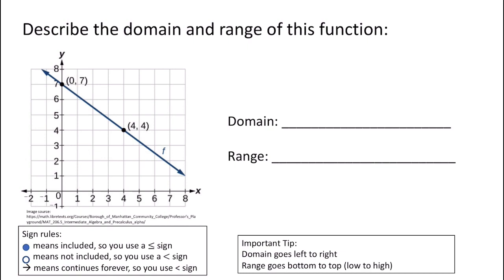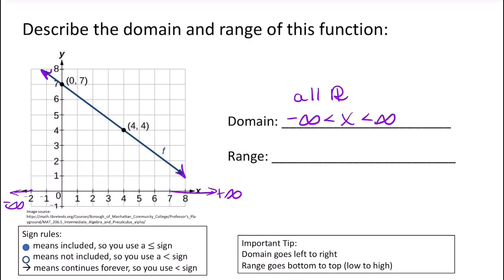Now let's describe the domain and range of this line with arrows at both endpoints. For the x values, it goes on forever to the right — positive infinity — and forever to the left — negative infinity. You're probably used to saying all real numbers, which is correct. When using inequalities, you write negative infinity less than x less than infinity, because x is going to be the entire number line. For the range, in the up and down direction it goes down forever to negative infinity and up forever to positive infinity. So it's the same: all real numbers, written as negative infinity less than y less than infinity.